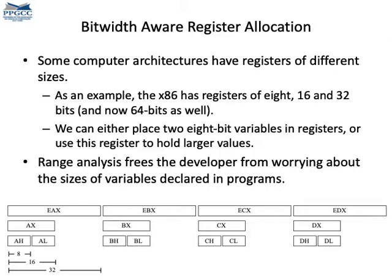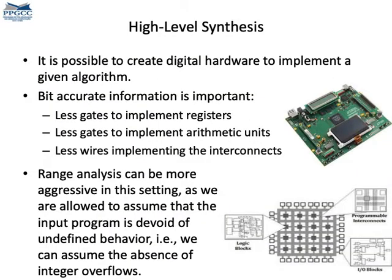Range analysis is also useful in register allocation, because some architectures have integer registers split into sub-registers, like x86 for instance. We can combine two registers of 8 bits into one register of 16 bits, and if we know that a variable is small enough to fit into 8 bits, we can have two instead of one register to use. Range analysis is also very important for high-level synthesis — the problem is how to convert a program, often written in C, to an FPGA, and if we know the size of the variables, we can save the bits used to represent them.